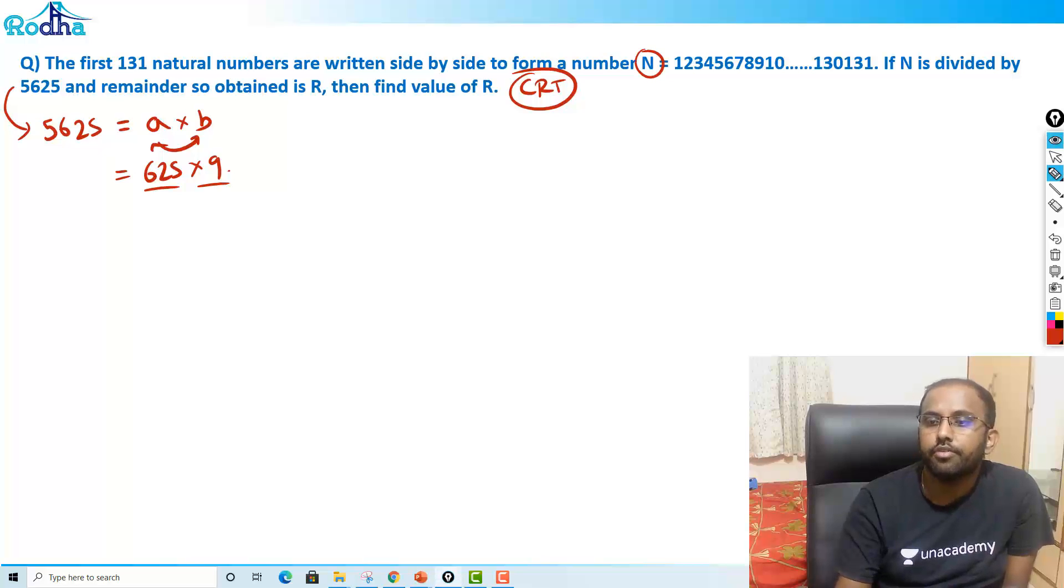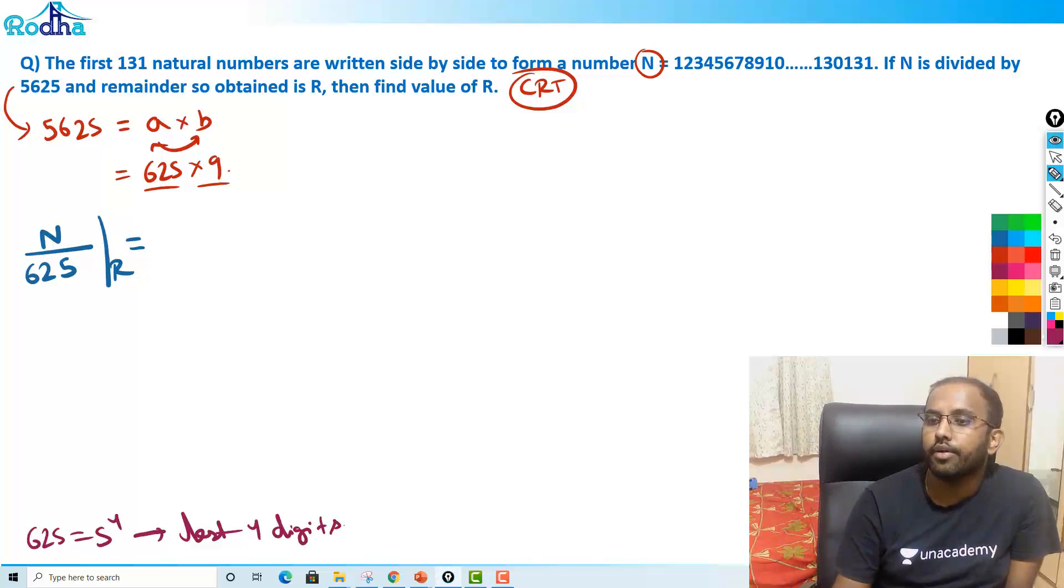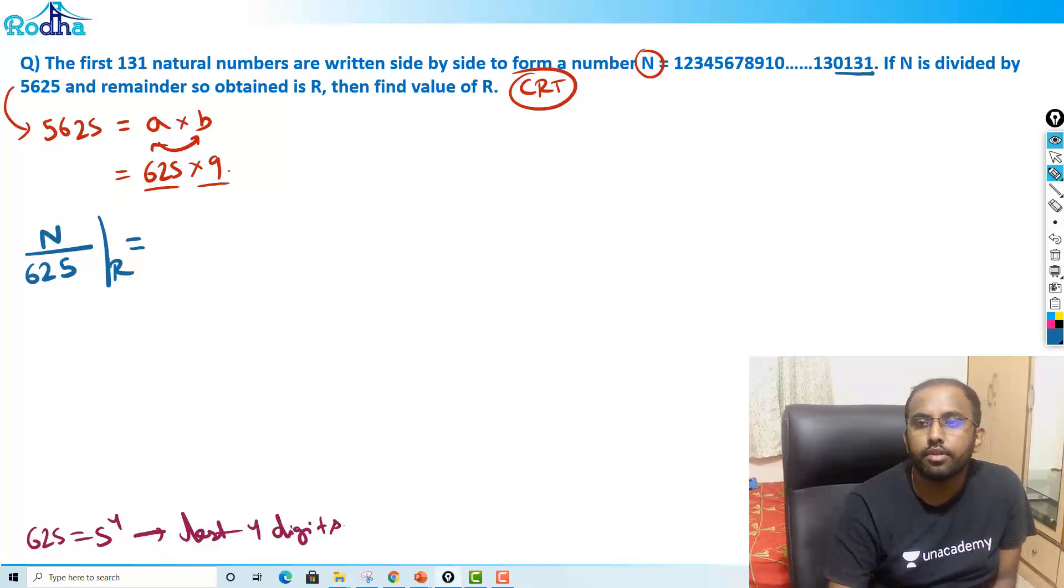Now I know the rule for both these numbers. Let me write this big number as N actually. If this is N, so can I write here that N = N/625. N/625 is equal to N/625, what's the remainder? I know this. What is 625? We know the rule for 625. 625 is 5⁴. 5⁴ means we only have to look for last 4 digits. Now if it is 625, what I can actually do here now? What are the last 4 digits here? 0, 1, 3, 1.